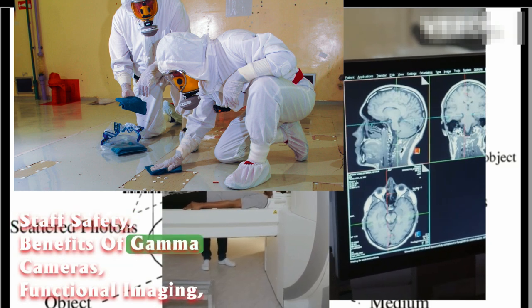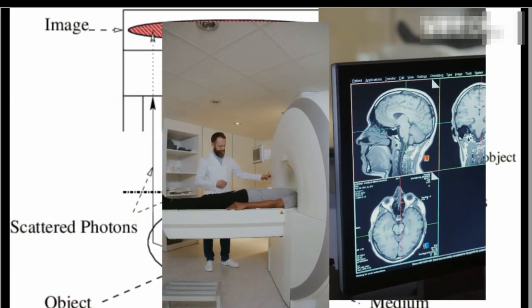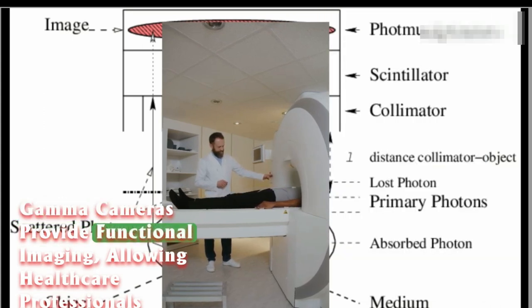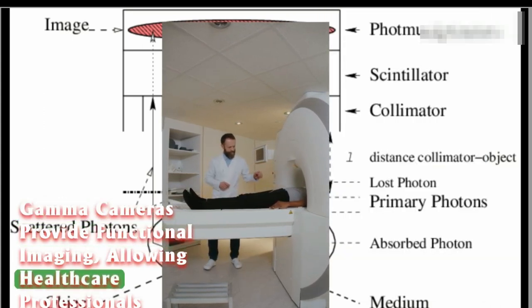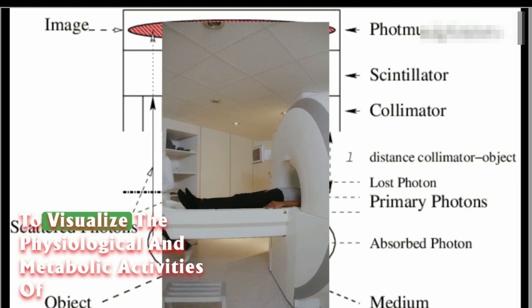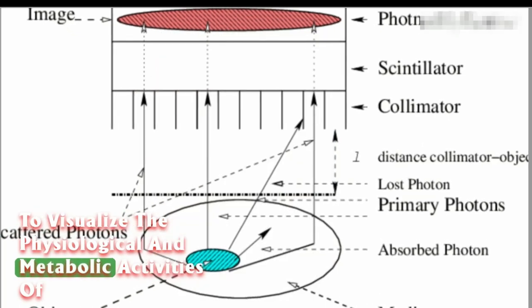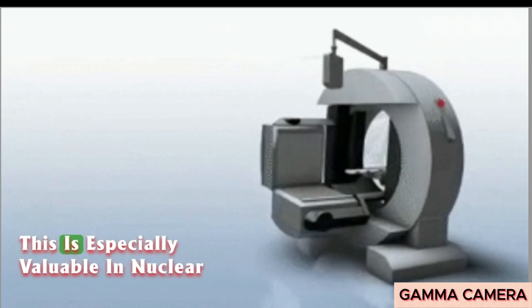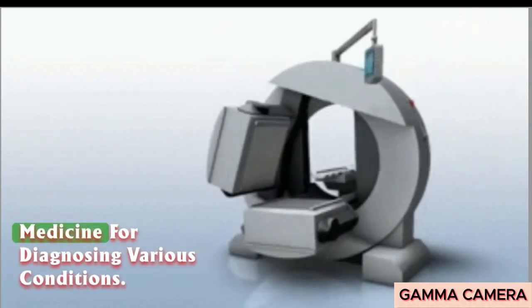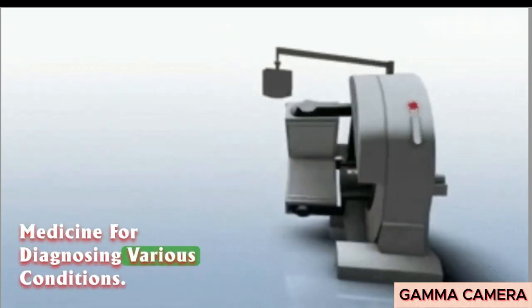Benefits of gamma cameras: Functional imaging. Gamma cameras provide functional imaging, allowing healthcare professionals to visualize the physiological and metabolic activities of organs and tissues. This is especially valuable in nuclear medicine for diagnosing various conditions.